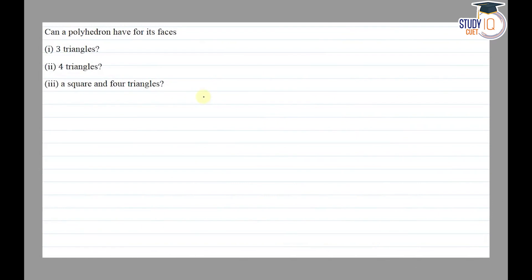Hello everyone, this question appears in Class 8th NCERT chapter on Visualizing Solid Shapes. This is the first question of Exercise 10.3. The question asks: can a polyhedron have for its faces (i) 3 triangles, (ii) 4 triangles, (iii) a square and four triangles? So firstly, we have a polyhedron with a triangular base.